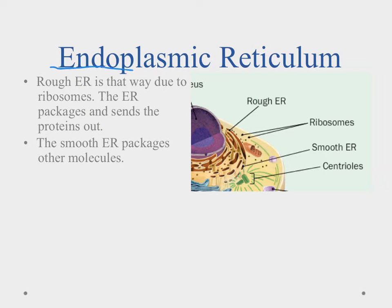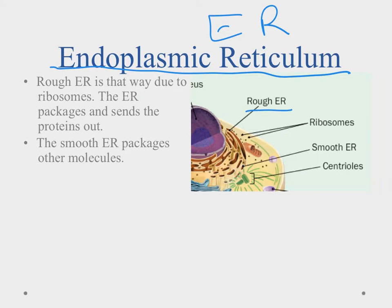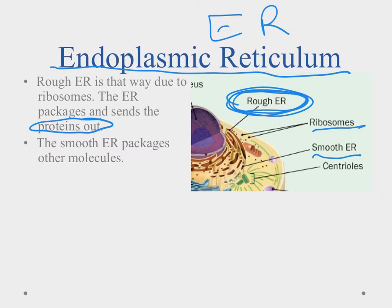Next up is the endoplasmic reticulum, and we can abbreviate that the ER. The ER is where we manufacture a bunch of different macromolecules that the cell will need. There are two different parts to the ER: there's the rough, and then there's the smooth ER. The rough ER gets its name because it has these ribosomes attached to it, and this is where we manufacture and send out proteins. The ribosomes are where we see protein synthesis happen, and those are attached to the endoplasmic reticulum, which makes it the rough ER.